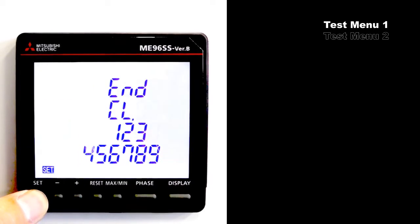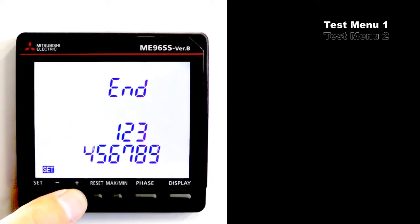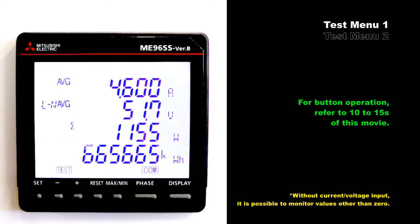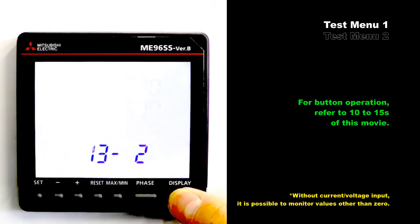Press and hold set for 2 seconds. Press plus to blink 9. Press set to move to the test menu. Press set to move to test menu 1. The communication test will be executed.